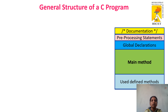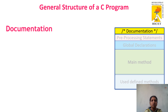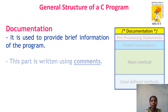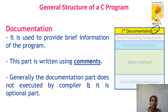The first section in the structure of a C program is the documentation section. This is used to give a brief introduction of the program — when a third person looks at the program, they can understand what it is about. It is written inside a comment line: slash-star, documentation, star-slash. Whatever is written inside the comment line will not be executed by the compiler, so this documentation section will also not be executed. It is an optional part.